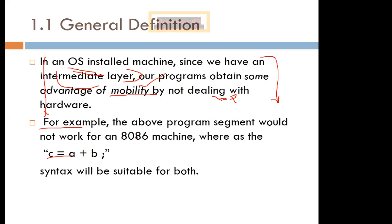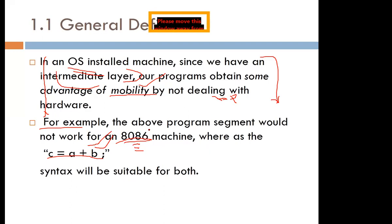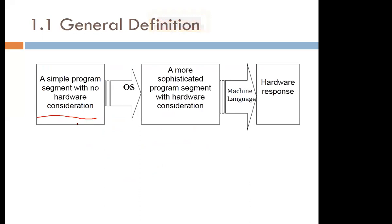In essence, writing C = A + B on an x86-based machine — that program would not run on a different architecture because the x86 uses its own syntax. But because of the operating system, it takes care of those processor-specific requirements and then runs your program. The user writes a simple program with no hardware consideration, and the operating system converts it into the sophisticated program that considers the hardware characteristics of that machine.